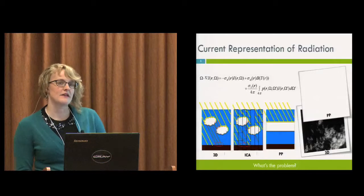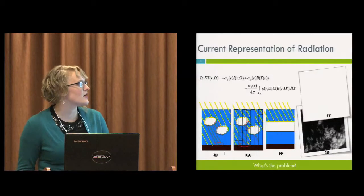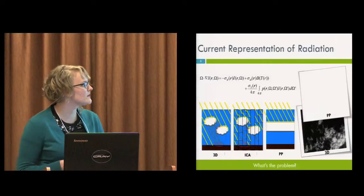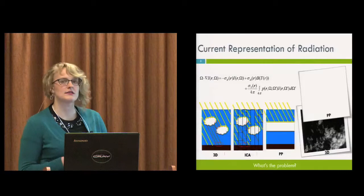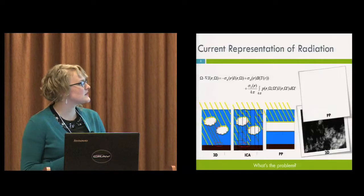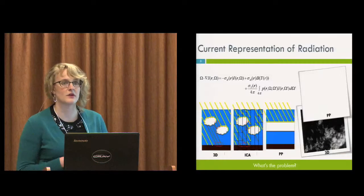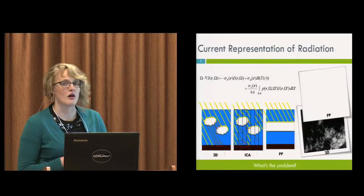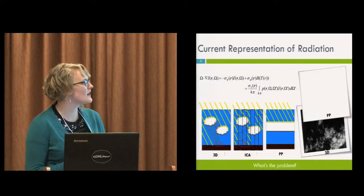So the more advanced models that we have in our weather and climate, coupled to our weather and climate models, are making some sort of compromise approximation. So it's still making an effort to capture the spatial variability in the atmosphere by discretizing the domain into columns.